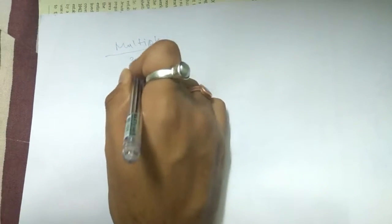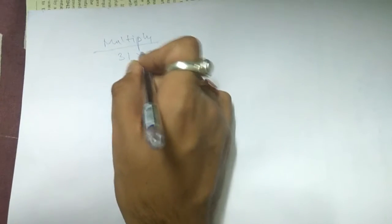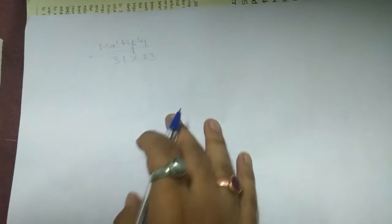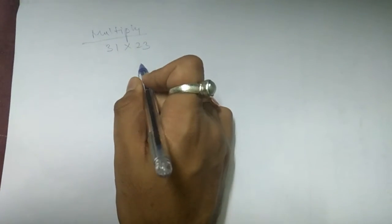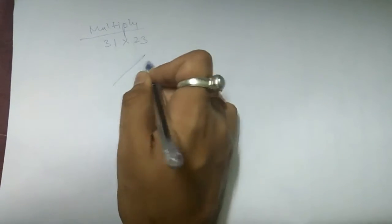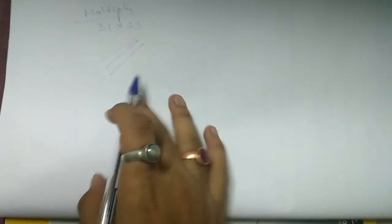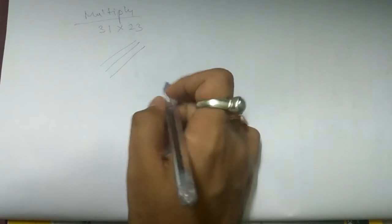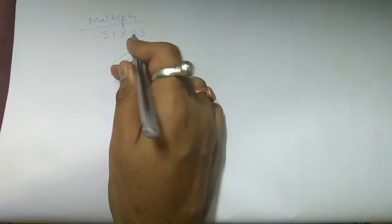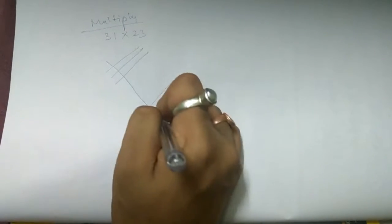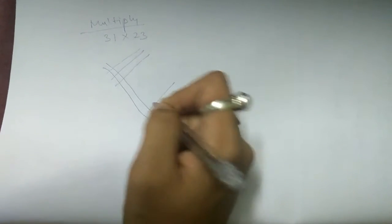Let it be 31 into 23. So for 31 into 23, just draw this: 1, 2, 3 for the 31. Next, what we will do is draw one line for the 23, which is 2.